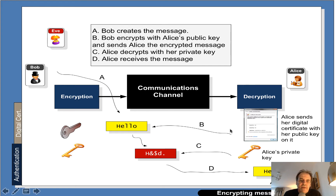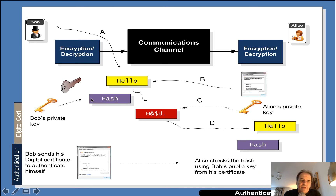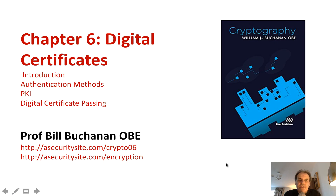With public key, we might use Alice's public key to encrypt and her private key to decrypt. But where certificates are normally used is in the signing process. Bob creates a hash of the message and uses his private key to encrypt that hash signature. On the other side, Alice uses Bob's public key to decrypt the encrypted hash of the message. Bob also sends over his digital certificate to authenticate himself.